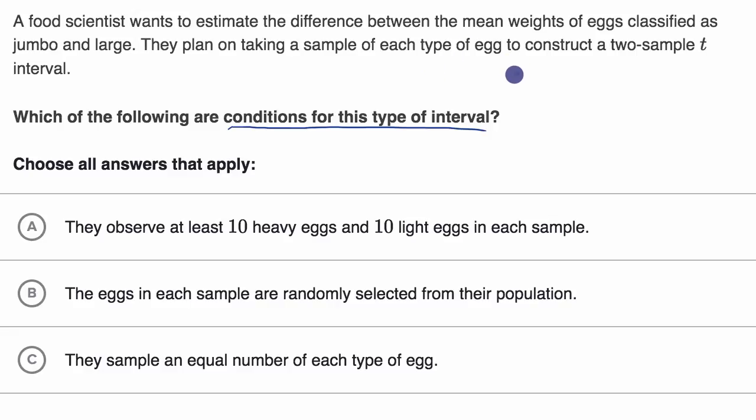We've done this many times in many different contexts. First of all, we have the random condition. That's the idea that each of our samples are random, or we are conducting some type of experiment where we randomly assign folks, or eggs in this case, to one of two groups. In this case, we are taking two samples, and we would hope that they are truly random samples.